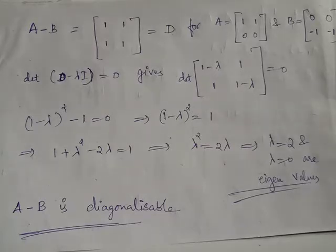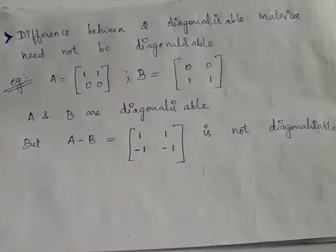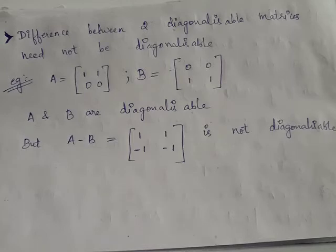But this example does not guarantee that the difference between two diagonalizable matrices will always be diagonalizable. Suppose we take A equals [[1,1],[0,0]] and B equals [[0,0],[1,1]]. We have A and B are diagonalizable matrices.